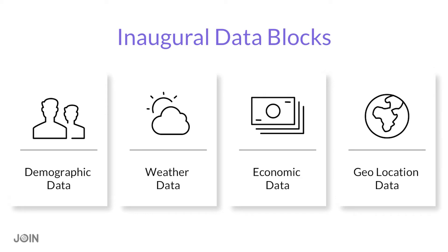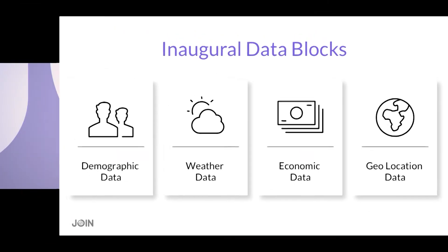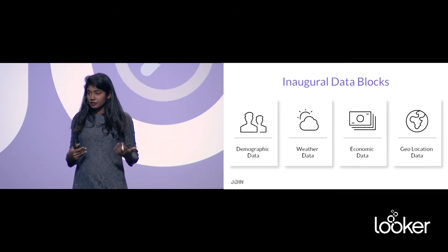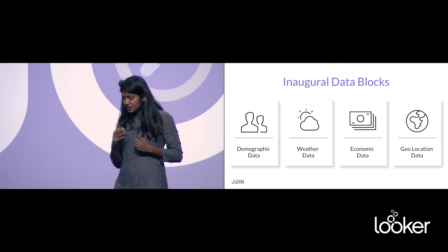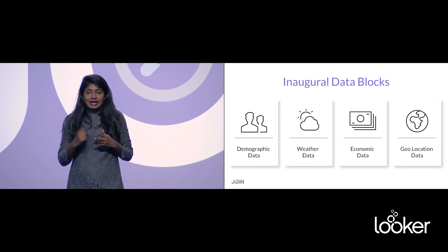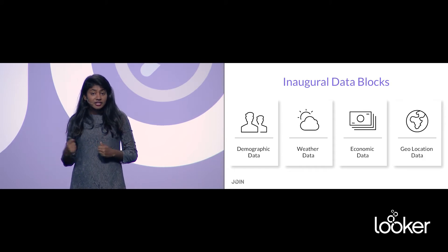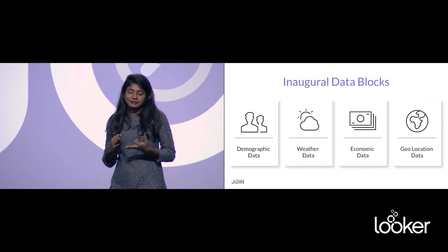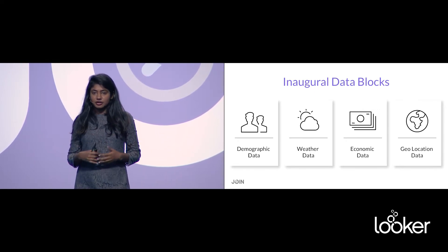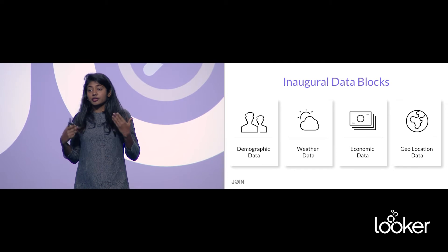We're also launching the weather data, which we just saw. We're working with Google to provide weather data across the U.S., all the way from 1920 up to the latest day, and we're going to be updating that information on a daily basis so you can easily get access to that data and combine it with your own. We're also launching economic data — economic indicators — so you'll be able to pull in things like GDP, debt, inflation rates, and interest rates, and compare that to your revenue or your growth.